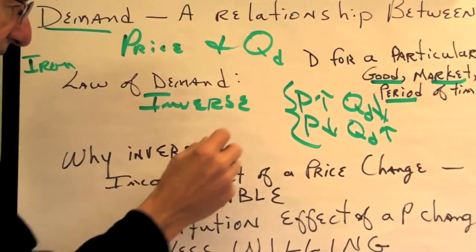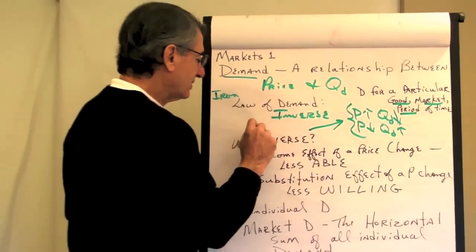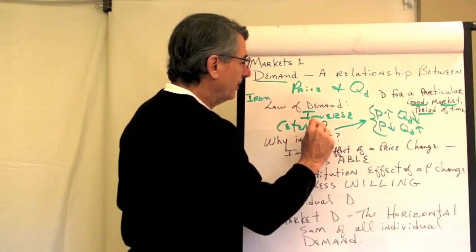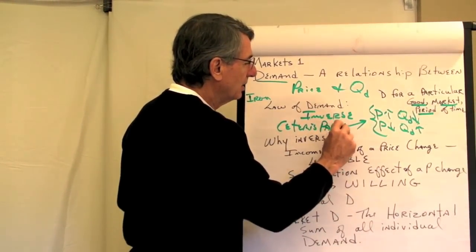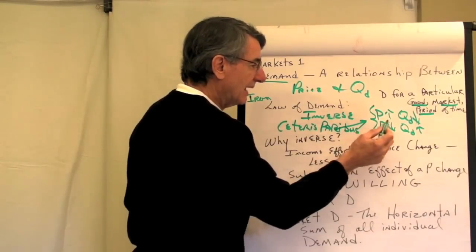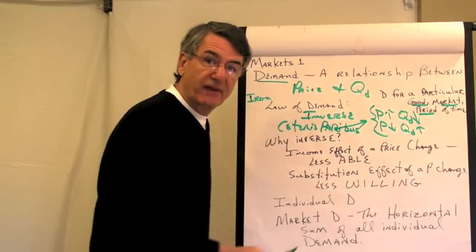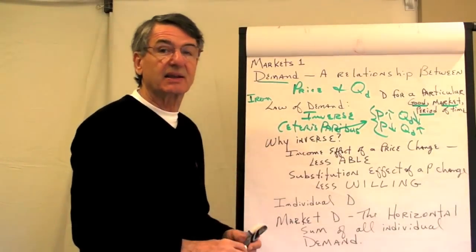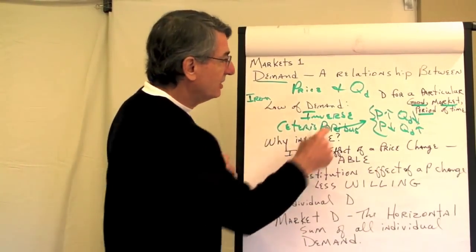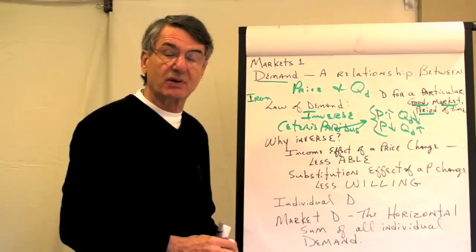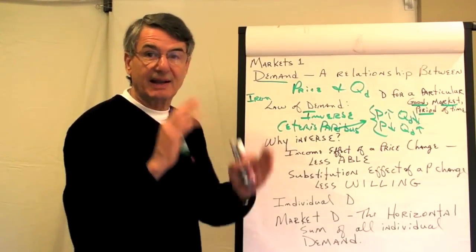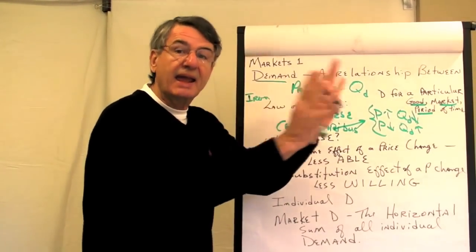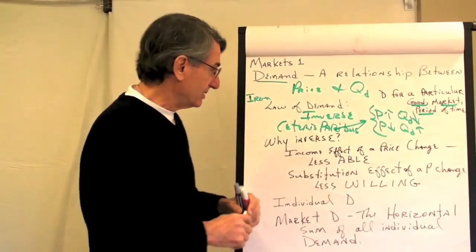And this assumes, naturally, ceteris paribus. That means that everything besides price that would affect consumers' decisions is held constant. It turns out that there are other things besides price that determine the quantity demanded of a good, but price is the most important one. That's why we make it the relationship between price and quantity, and all of these other things are held constant.